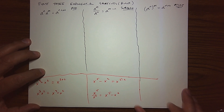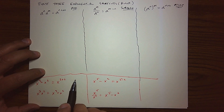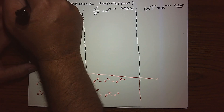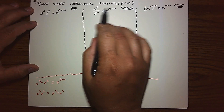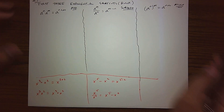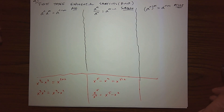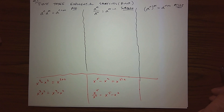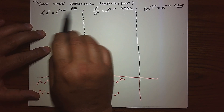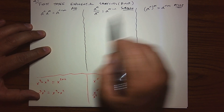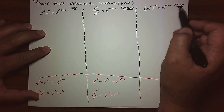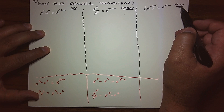Everything begins in Chapter 4, and in 4.1, what we're basically doing is talking about the rules of exponents, otherwise known as shortcuts. And basically there are three top rules: there's a condition where we can add the exponents, there's a condition where we can subtract the exponents, and there's a condition where we can multiply.